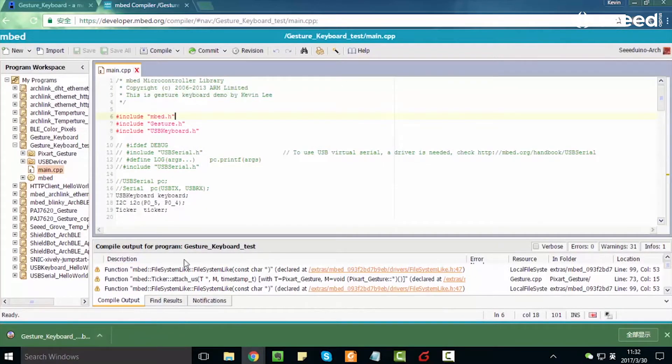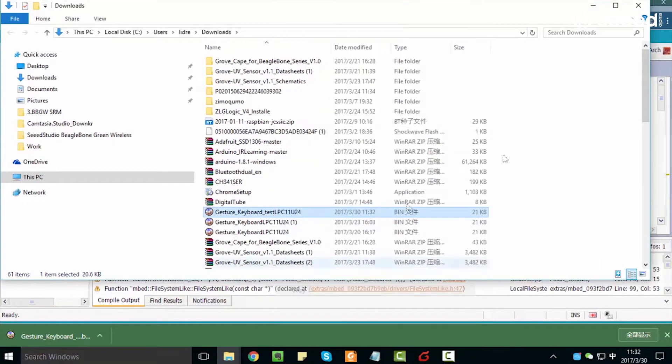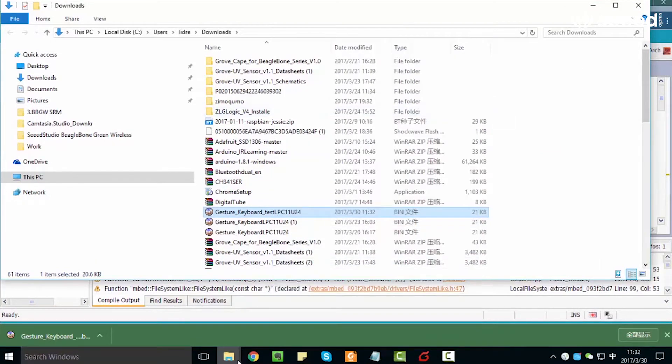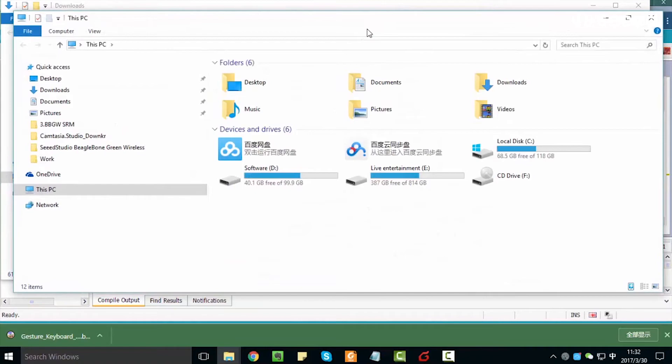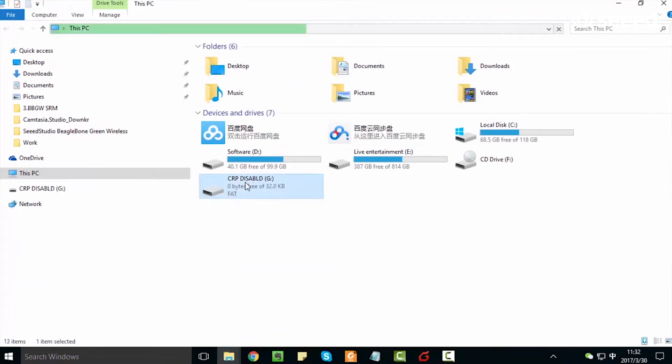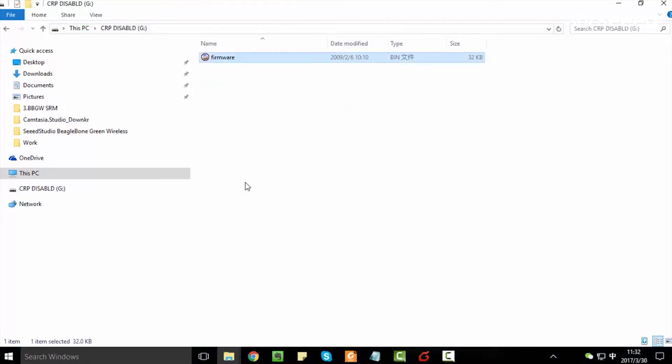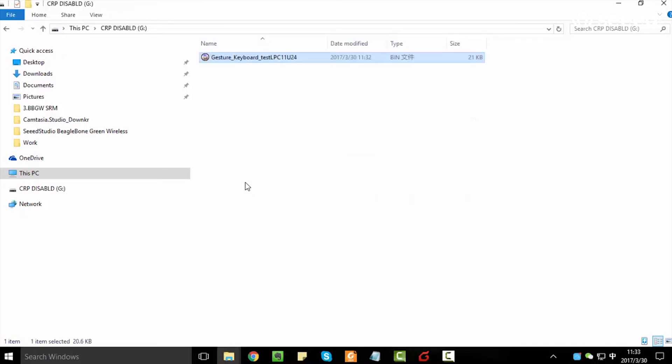So I'm going to open up my downloads folder. And I will copy and paste this file. Next, I'm going to go to my computer. And I have the Arch plugged in right now. But if I hold down the reset button for about three to five seconds, it'll appear as CRP disabled. There it is. And I can open this up. See the old firmware on it. I'm going to delete that and put on our gesture control firmware instead. And now, I press the reset button just very quickly on the board. And it will be ready to go.